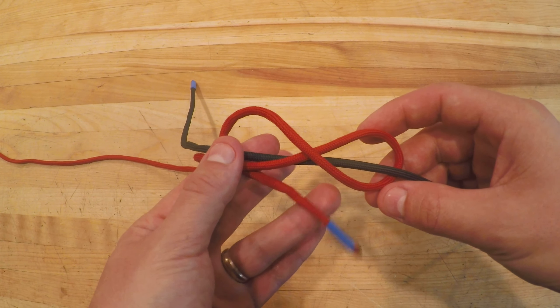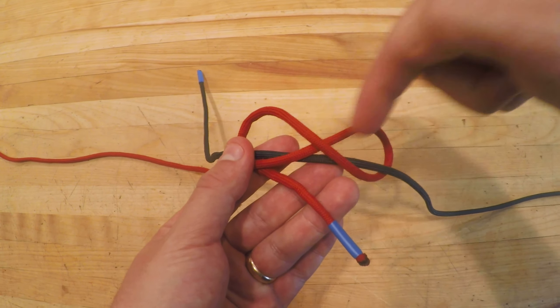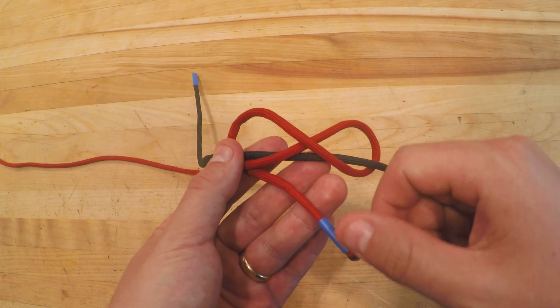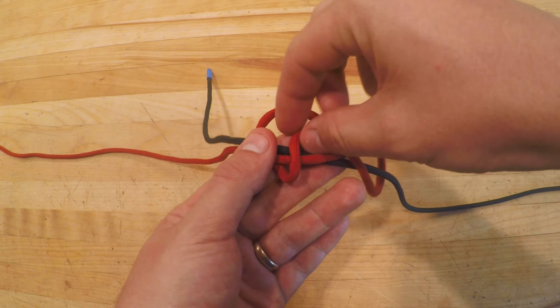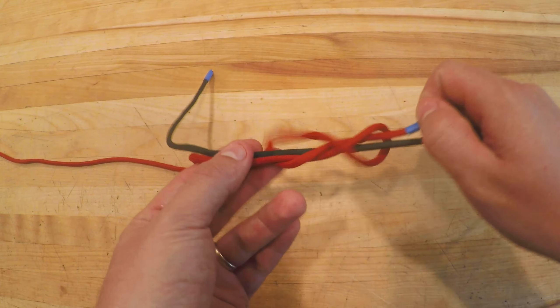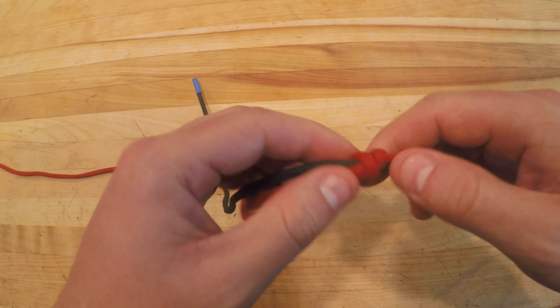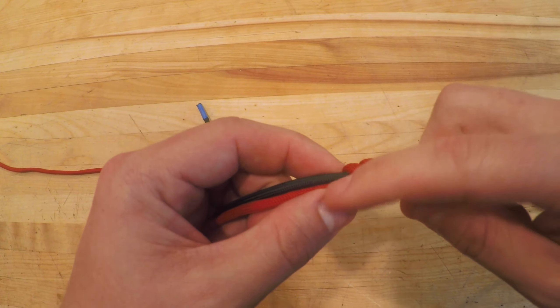Next what I'm going to do is I'm going to take my working end here and I'm going to pass it through this first loop, underneath the X, and out the second loop like so. So through, underneath and through, and then I'm going to tighten. Done properly you'll notice that the knot forms a nice neat X here.